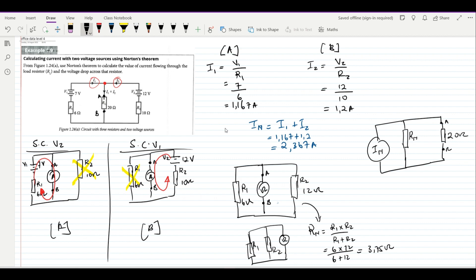So now we are going to use our current divider rule to calculate the current that flows through the load resistor. Now what does the current divider rule say? The opposite resistor of the load resistor would be the Norton resistance.